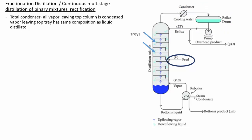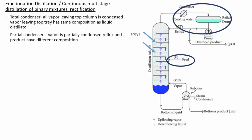Key terminology in fractional distillation: a total condenser means all vapor leaving the top of the column is completely condensed, so the reflux and the distillate product have the same composition. When the vapor leaving the top tray has the same composition as the liquid distillate, it is a total condenser. A partial condenser means the vapor is only partially condensed, and the reflux and the overhead product have different compositions.